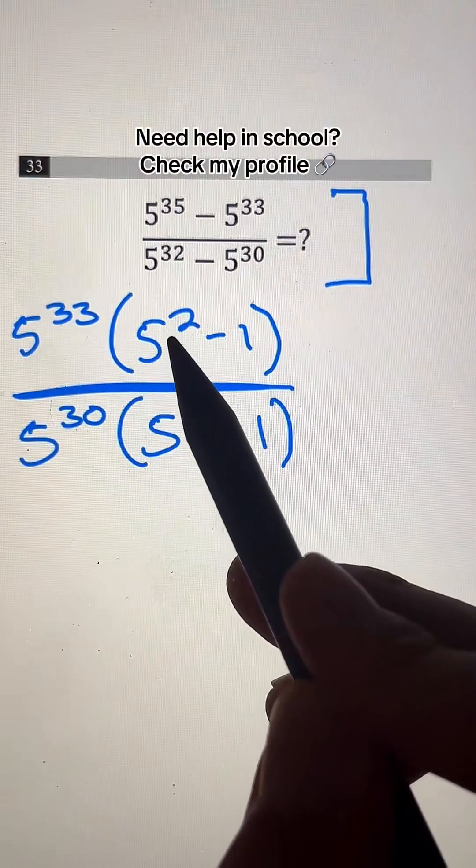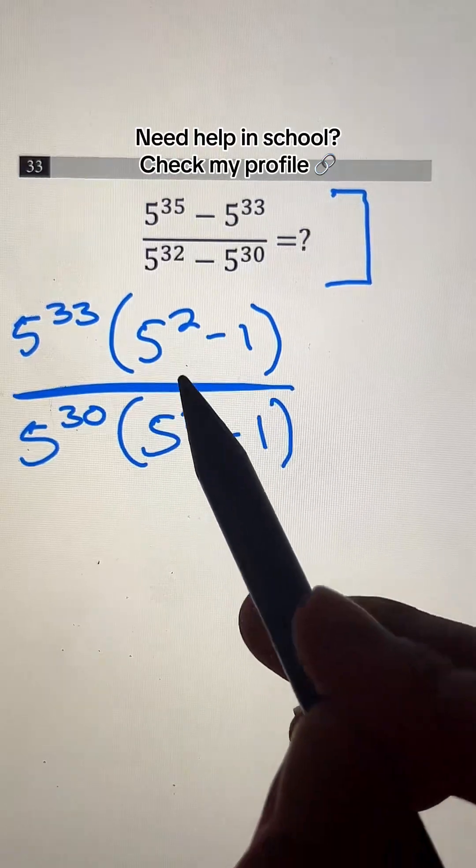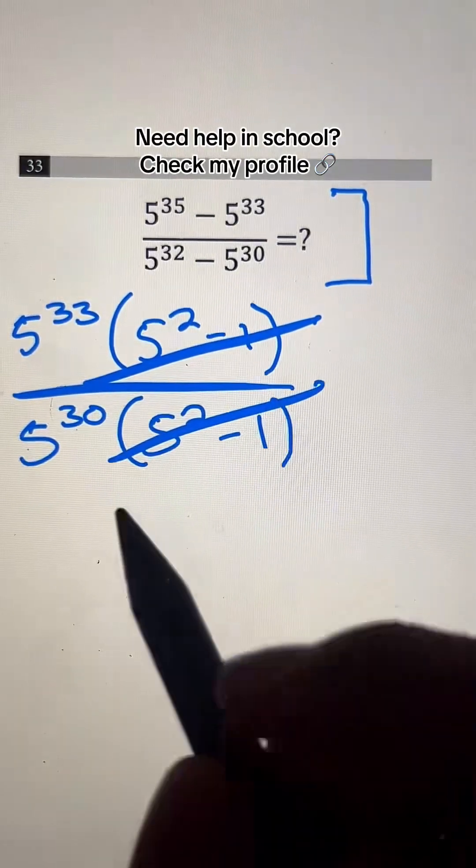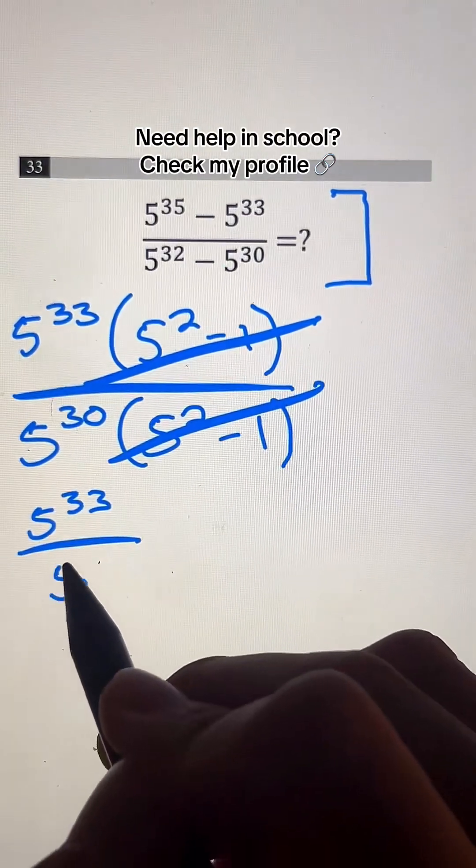And because we have the common factors of 5 squared minus 1 on both the top and bottom, we can actually just cancel them out and get rid of it. And now we're left with 5 to the 33rd divided by 5 to the 30th.